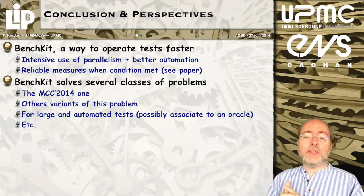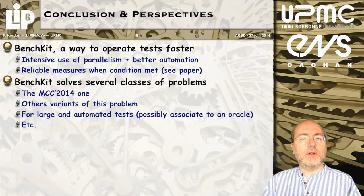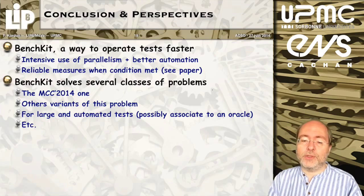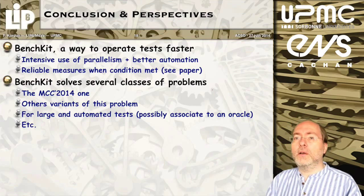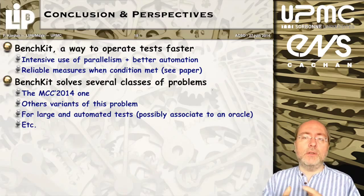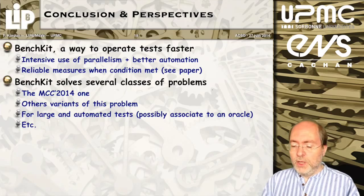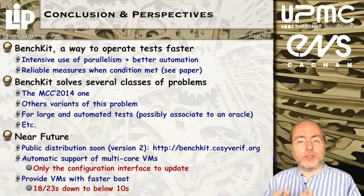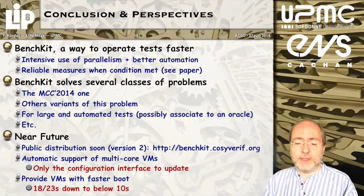In conclusion: BenchKit is a way to operate tests faster. It makes intensive use of parallelism on multicore machines especially, and also clusters of machines. It allows better automation and parametrization, and performs reliable measures when conditions are met. BenchKit solves several classes of problems — typically software contests such as SAT solver contests, hardware verification contests, and the model checking contest at PetriNet. In the near future, there will be a public distribution of the second version of BenchKit, which is the one presented here and which was used for the model checking contest at PetriNet 2014.